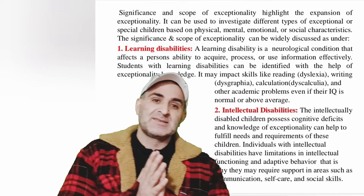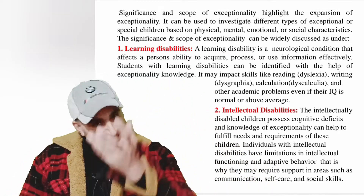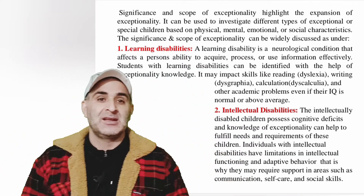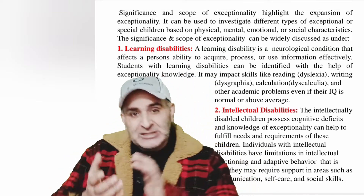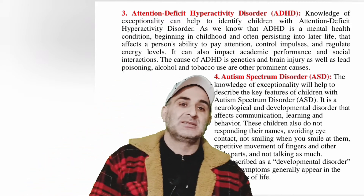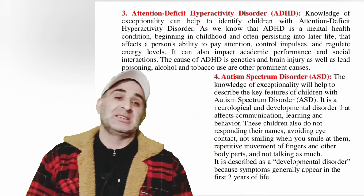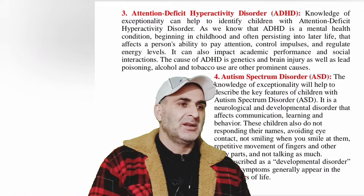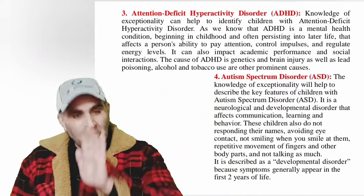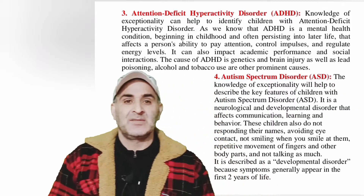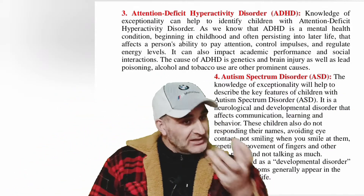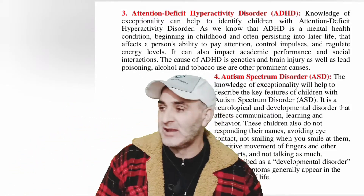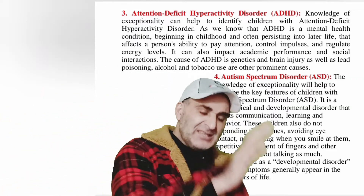So it means the significance and scope of exceptionality is very much broad, because knowledge of exceptionality helps us to identify intellectually disabled children. Number three: Attention Deficit Hyperactivity Disorder, abbreviated as ADHD. It is basically a neurological disorder which affects the attention of an individual. Those children who have ADHD don't focus and don't concentrate on anything.